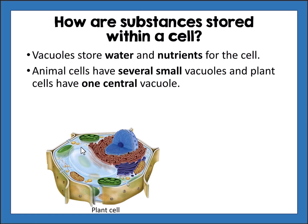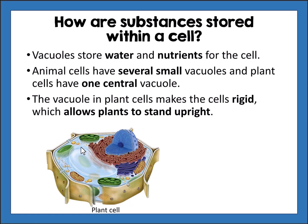The vacuole in plant cells makes the cells rigid, which allows plants to stand upright. As those rigid plant cells are stacked upon each other with vacuoles swelled with water, it makes the stem or leaf of the plant upright and rigid. When a plant loses water it wilts, because the vacuoles shrink and the cell is no longer rigid — it starts to fold in on itself.